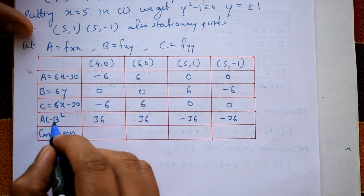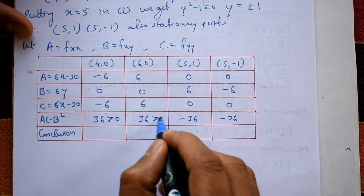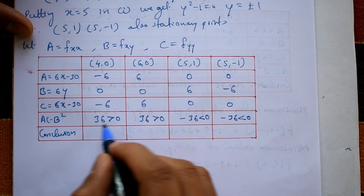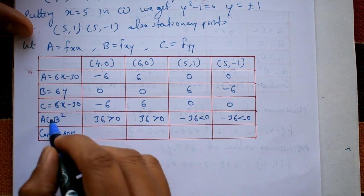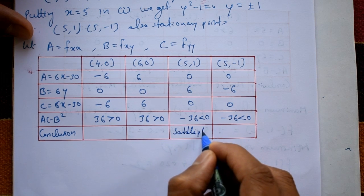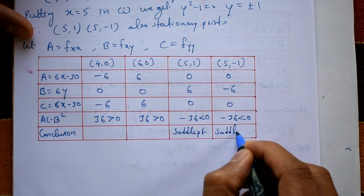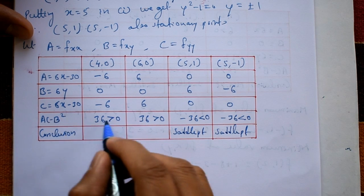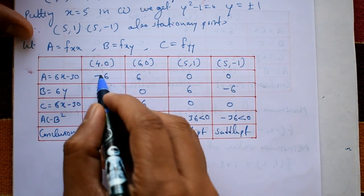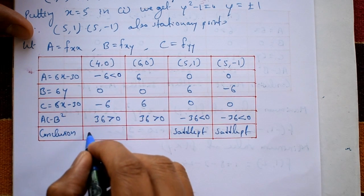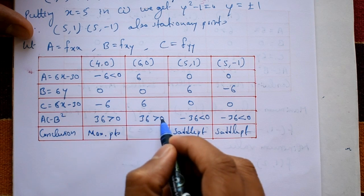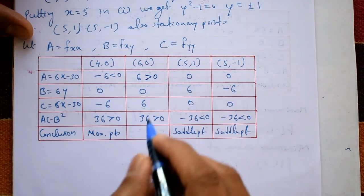Compute ac - b² for each point. At (4,0): ac - b² = (-6)(-6) - 0 = 36 > 0 and a < 0, so this is a maximum point. At (6,0): ac - b² = 36 > 0 and a > 0, so this is a minimum point. At (5,1) and (5,-1): ac - b² = 0 - 36 = -36 < 0, so these are saddle points.